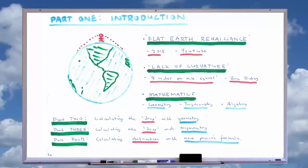In part three of this series, I will show how trigonometry can be used to calculate the drop from the tangent line intersecting the Earth at point A to the dropped Earth at point B.